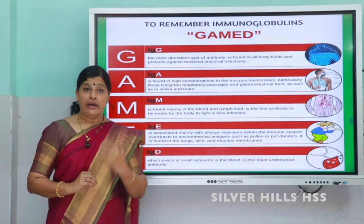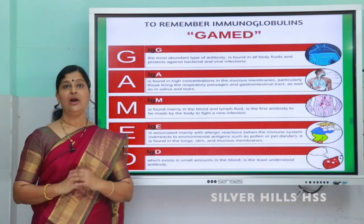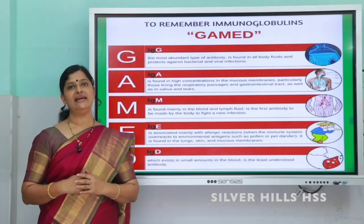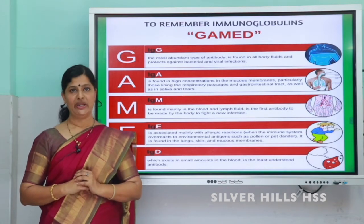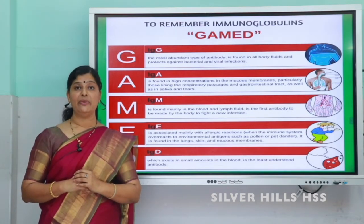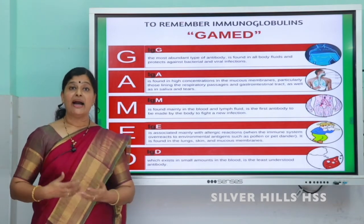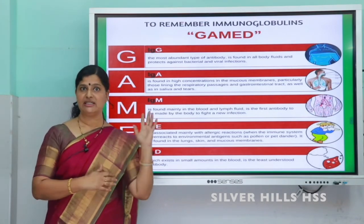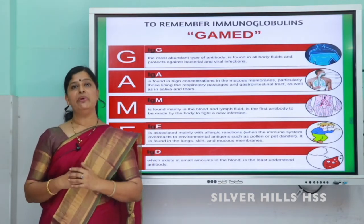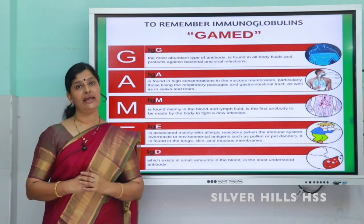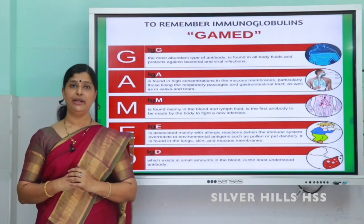Now, acquired immunity has two types. One is called humoral immunity and the other is called cell-mediated immunity. Humoral immunity is the immunity that we get by the production of antibodies — just as we explained with the antibody production process. This immunity is called humoral immunity.